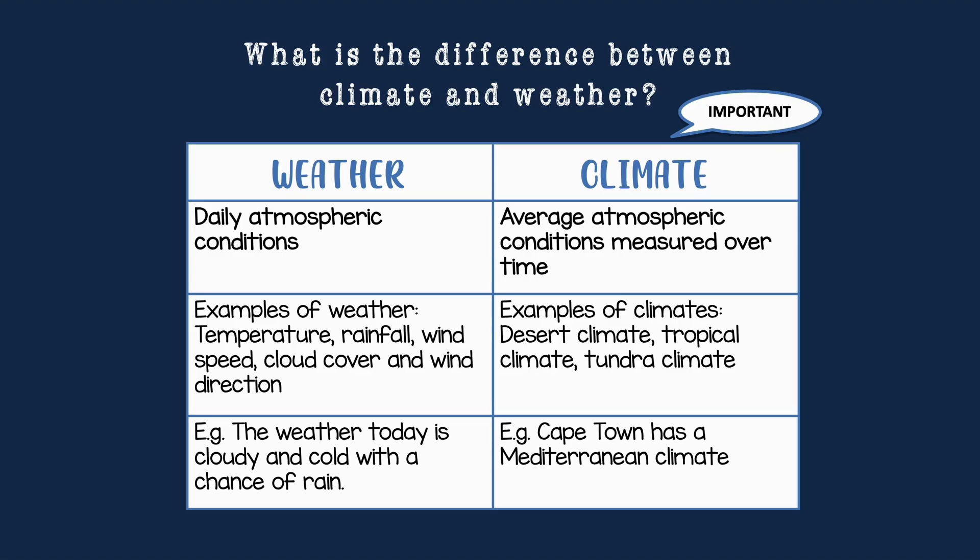If we take Johannesburg, for example, the weather can be different every day, but our climate is quite moderate — wet summers that can get quite hot, and dry, cooler winters. Even though in summer we could have one rainy day and one dry day — those are the daily atmospheric conditions — our climate has a general pattern of what happens in the different seasons. In summer: wet and moderate temperatures. In winter: cooler temperatures, very dry, and clear skies.